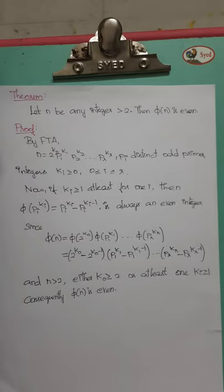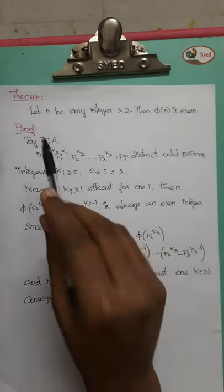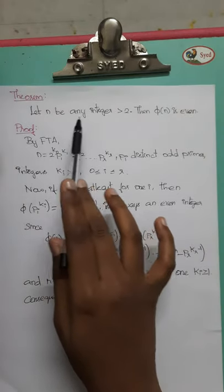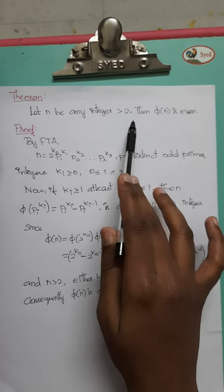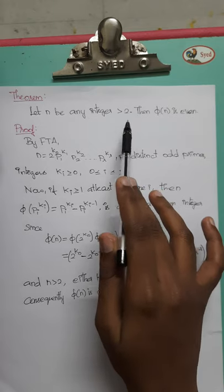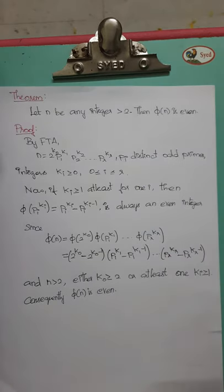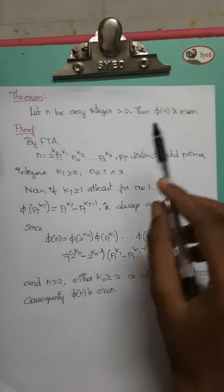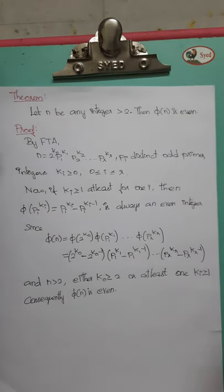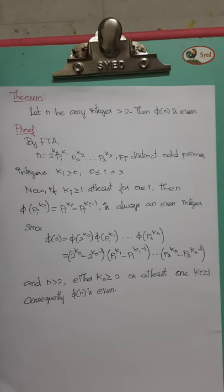We have a definition of pi of n, and the Euler's phi function is a theorem. The theorem is: if you have an integer n greater than 2, then pi of n is even.